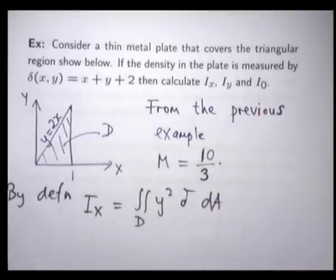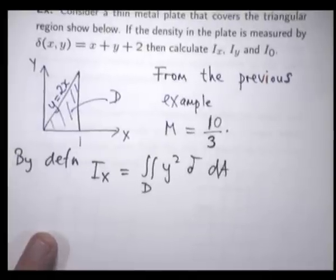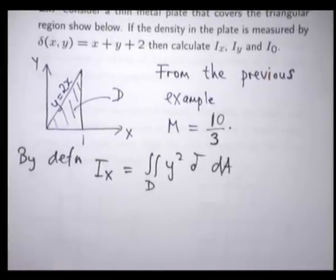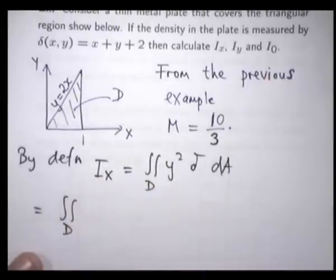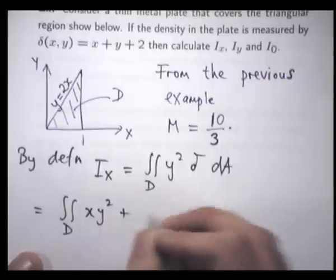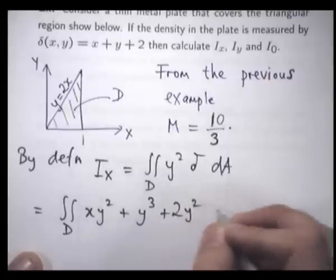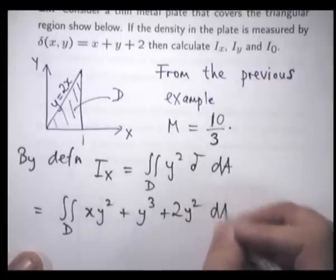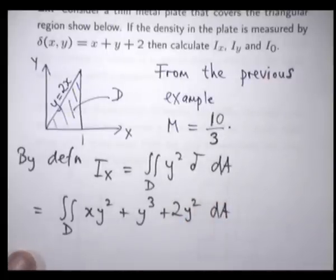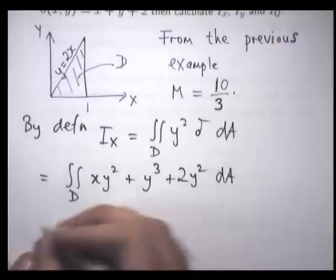Okay, I'm just going to drop off the argument of the delta there just to save a bit of space. All right, for this example, our integrand is going to be yx squared plus y cubed plus 2y squared dA. All right, we have the same description from before. So we can put in our limits of integration.